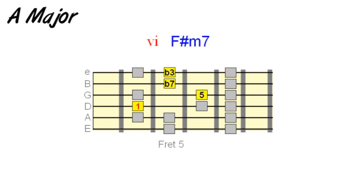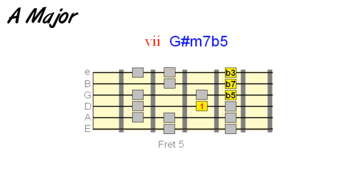F-sharp minor seven as our sixth degree chord. Moving on, G-sharp half diminished as our seventh degree chord. If you look at the intervals in relation to the seventh degree root, we can see what makes up this type of diminished chord — sometimes called a minor seven flat five chord.